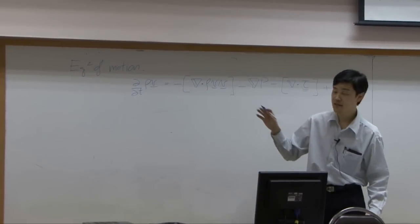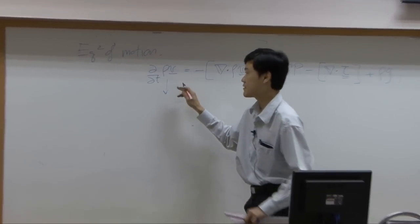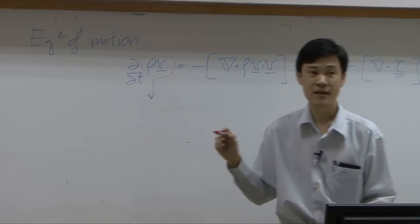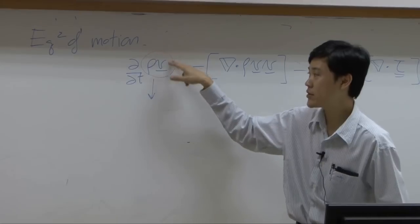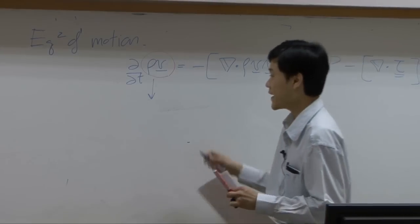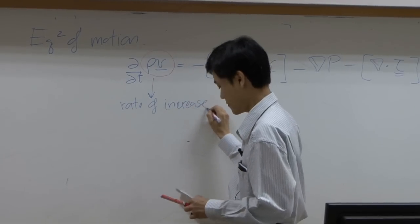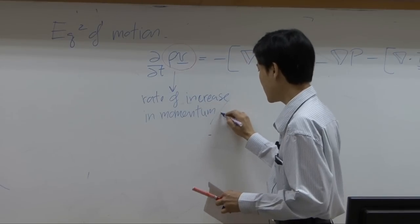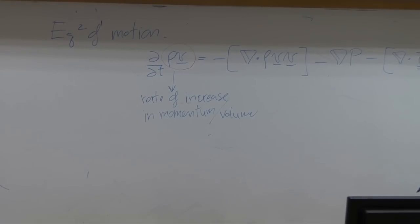If you look into the meanings of equation of motion, this term is, you know, the rho v is momentum, okay? So you look into the change of momentum with respect to time. So you can say that this term is rate of increase in momentum per unit volume of your system.